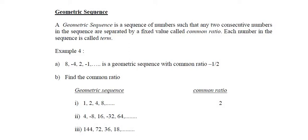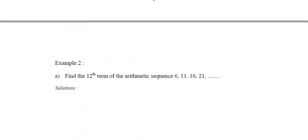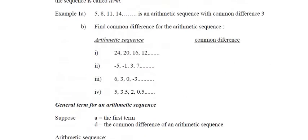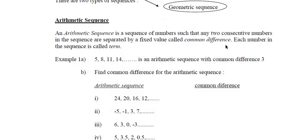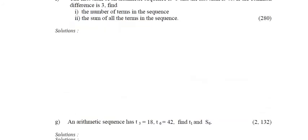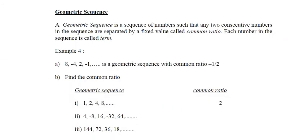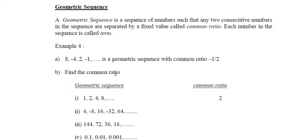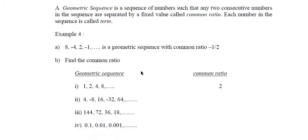Compared to an arithmetic sequence, an arithmetic sequence has a common difference when the difference between each term is the same. So for a geometric sequence, the ratio between consecutive terms is the same.